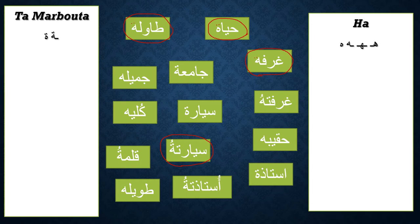Let's check 'sayyaratuhu' — his car. Pronounce it: 'sayyaratuhu.' This one — is it ha or ta marbuta? Anytime it means 'his,' you take off the two dots because it's ha, not ta marbuta. Let's check 'jamila' — add dhamma: 'jamilatun.' Are you pronouncing ta? Yes. Also, all adjectives: if you see ta marbuta at the end of an adjective, it's ta marbuta — no way any adjective takes ha. All adjectives are ta marbuta when they are feminine.